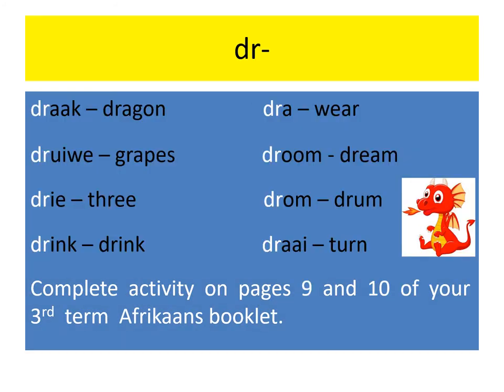Our third and final sound for this term is dr. This comprises the letters D and R, which is found at the beginning of words. Words like draak, draver, dri, drnk, dra, draun, drum, and draai make up this sound.